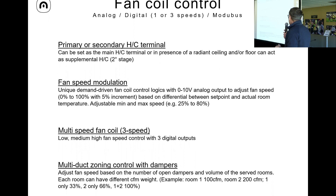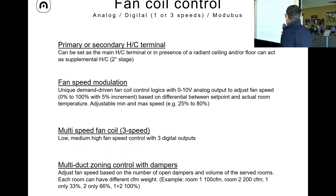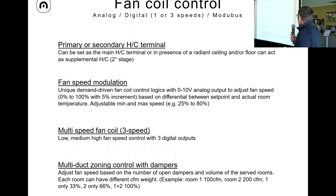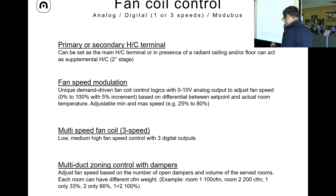We integrate with different fan coil types. We do multi-duct zoning control with dampers. We also have three-speed fan coils, or what we really like — fan speed modulation. Fan coils are typically used as a second stage, as a supplement to the radiant floor or radiant ceiling for both heating and cooling. But in some rooms you can also add a fan coil with no radiant, and that's also doable.